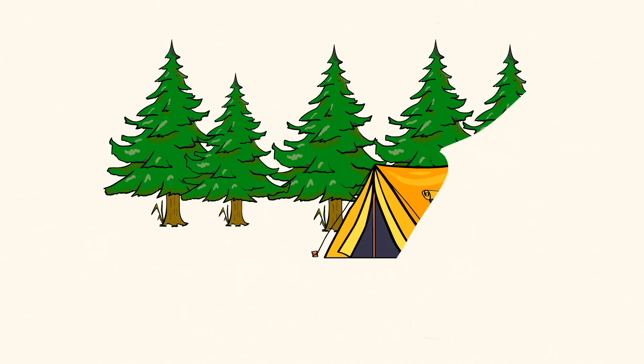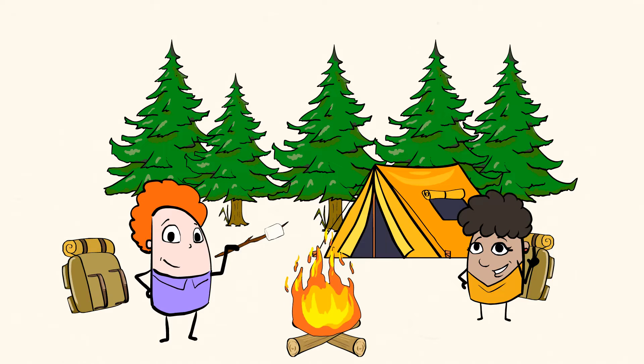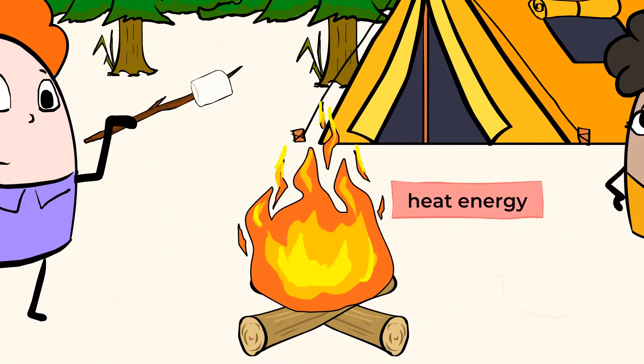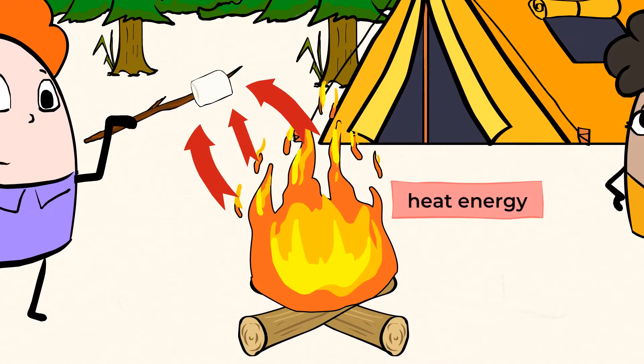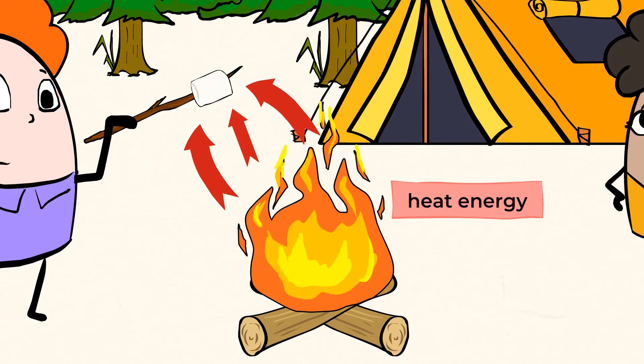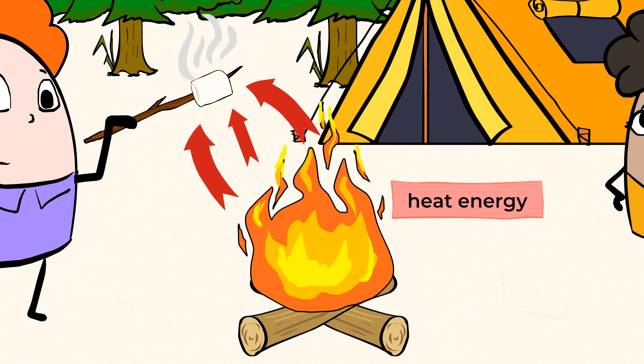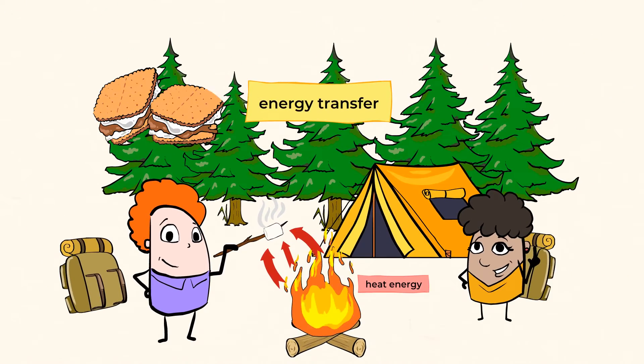Hey, speaking of tasty treats, who doesn't love roasting marshmallows over a campfire? Campfire? Yep, you guessed it. Another example of energy being transferred. In this case, heat energy is being transferred from the burning wood to the marshmallow, making it soft and gooey and just a little crunchy on the outside. Anybody want some s'mores? I definitely do.